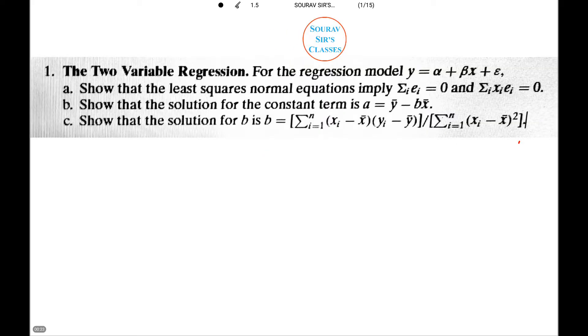Now the two variable regression for the regression model y equals alpha plus beta x plus e. We need to show that the least square normal equations imply summation i e_i equals 0 and summation i x_i e_i equals 0.